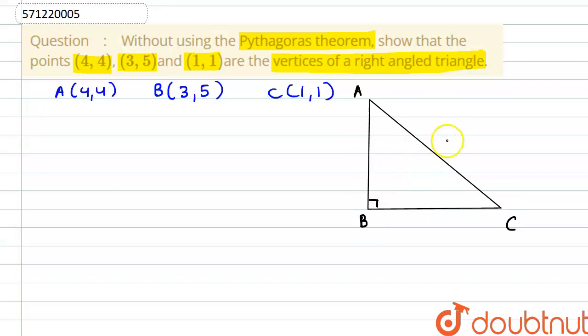Or we can say here that AB is perpendicular to BC. This statement should satisfy if this is a right-angled triangle. For that, we have to find the slope of these two lines.